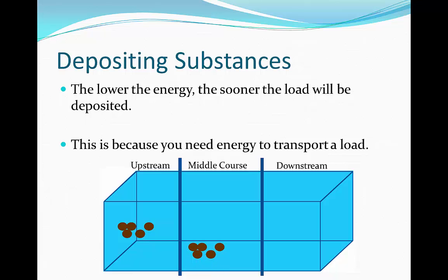In the middle course we get less energy and the amount of material begins to get deposited. At this point it's moving through traction or saltation, not travelling at full speed but beginning to settle. Then in the downstream the sediment settles completely because the river doesn't have enough energy to transport or erode the material, so it gets deposited and left stationary.